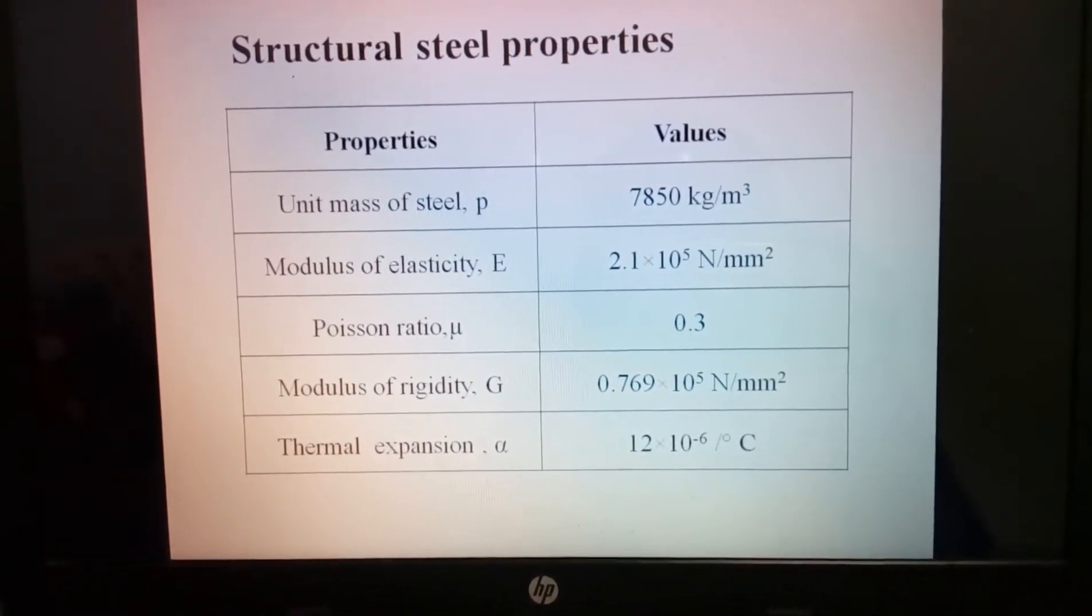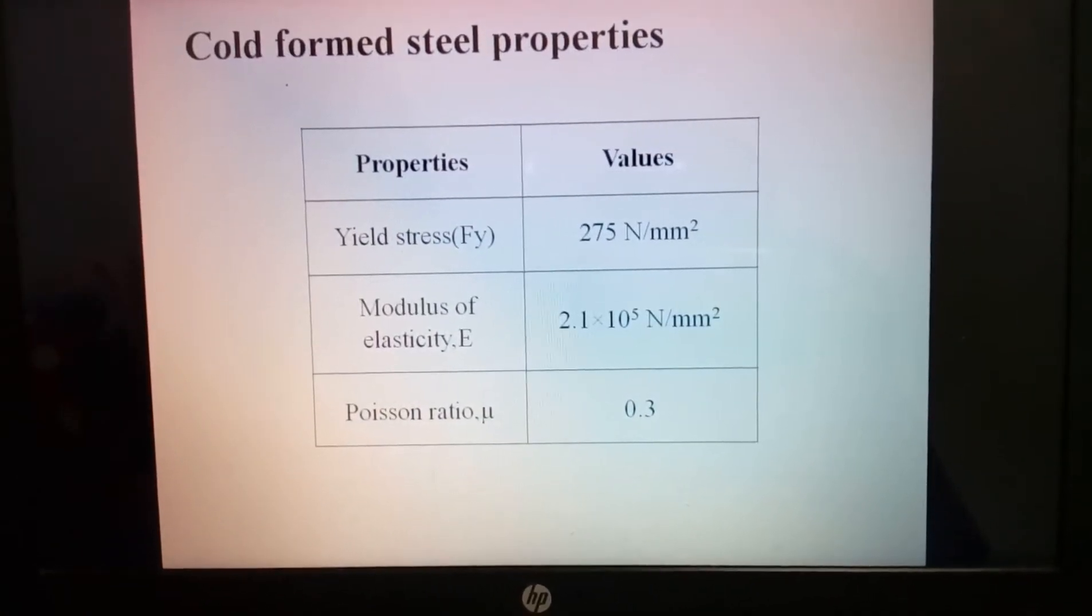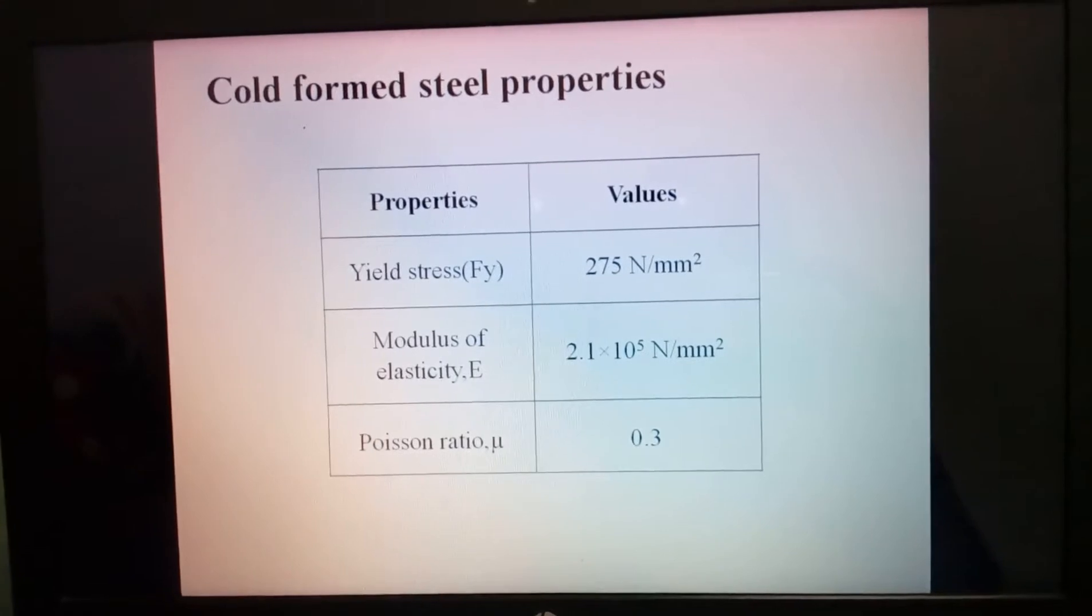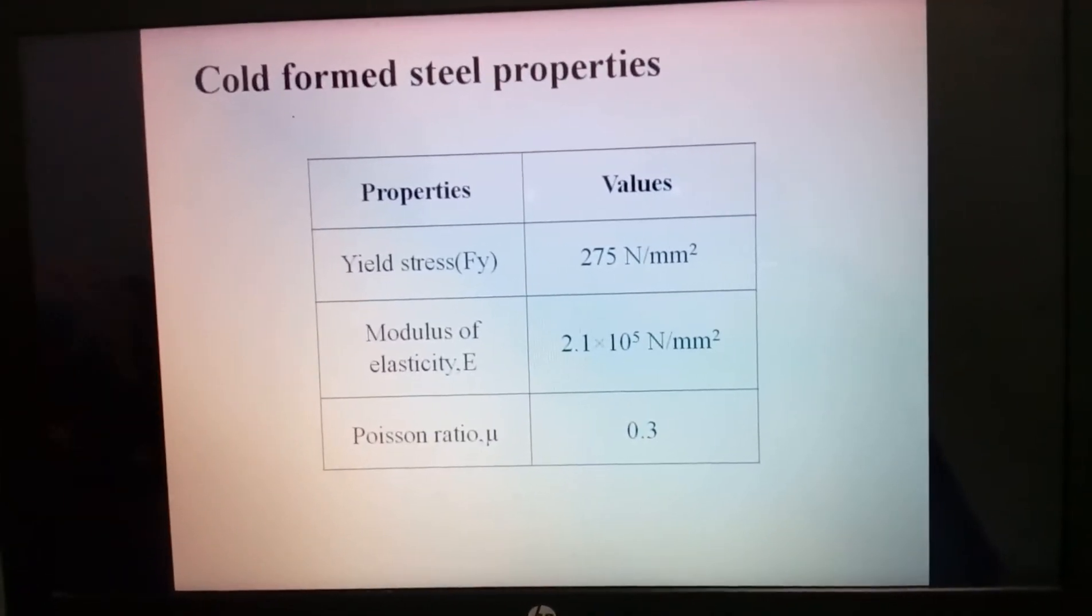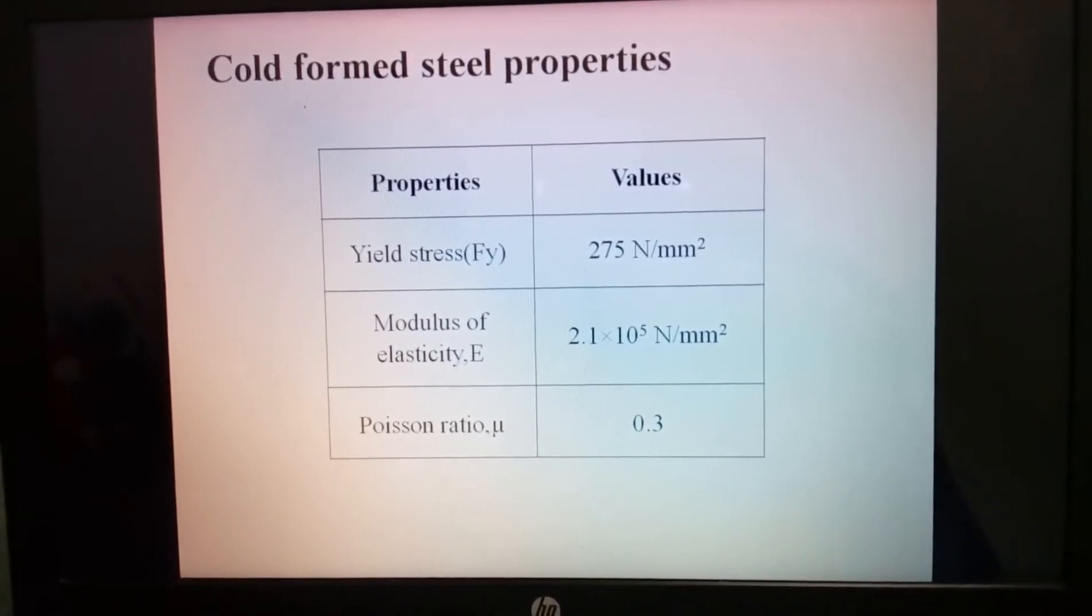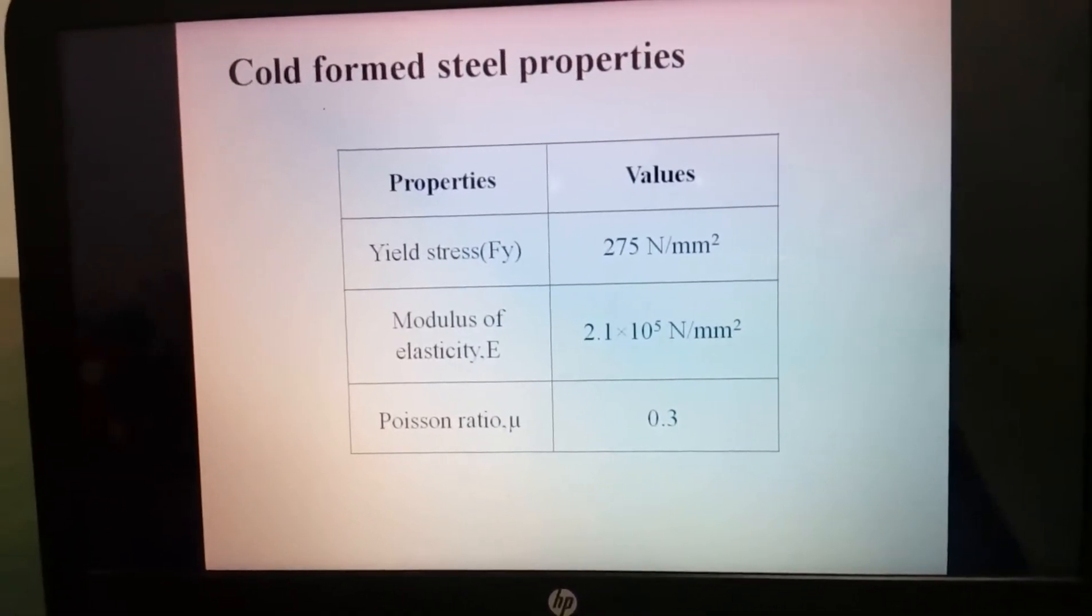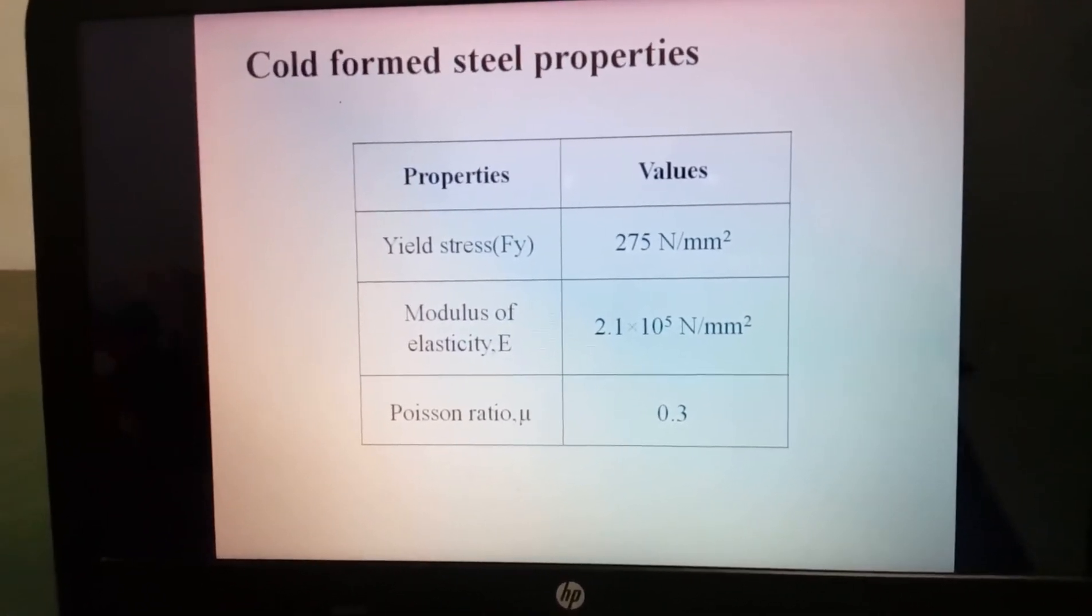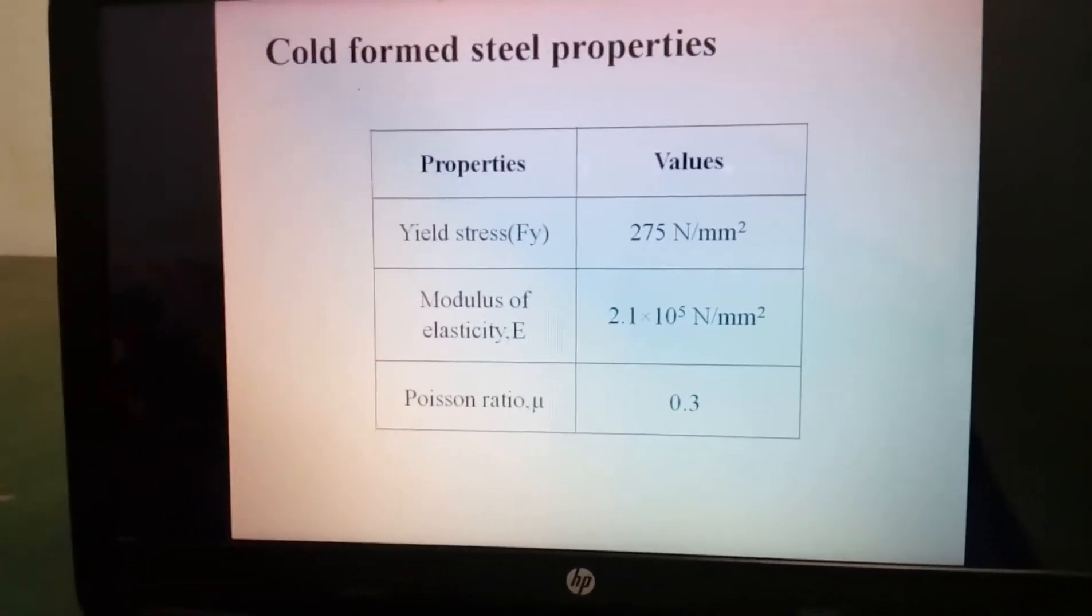The thermal expansion is 12 into 10 power minus 6 per degree Celsius. These are the cold formed steel properties. In this cold formed steel the yield stress is 275 N/mm². Modulus of elasticity is 2.1 into 10 power 5 N/mm². Poisson ratio mu is 0.3.